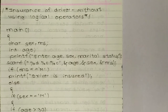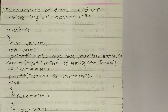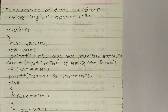Now we are comparing: if ms is equal to equal to M — the equality operator. If ms, that is marital status, is equal to capital M, so marital status is equal to married. Here we are first discussing marital status, so we write: if marital status ms is equal to M, then printf driver is insured.